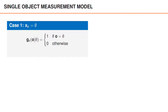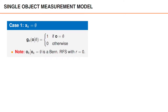We will now convert these assumptions into a mathematical model. Let us start by looking at the distribution of the object measurements when we have at most one object. We assume that we cannot get any object measurements unless there is at least one object present. Conditioned on XK being empty, the set of object measurements must therefore also be empty — that is, the probability that OK is empty is 1. Note that OK, given that XK is empty, is a Bernoulli random finite set with existence probability r equals 0.